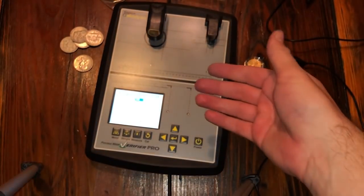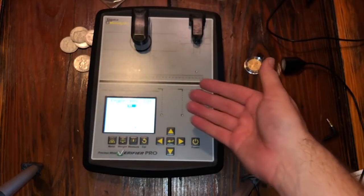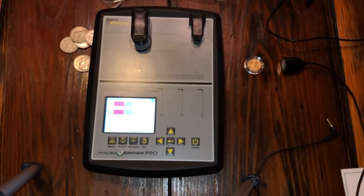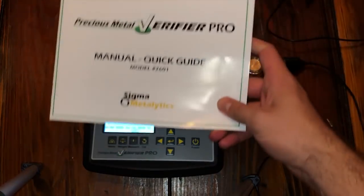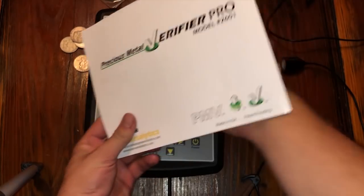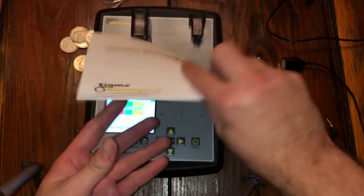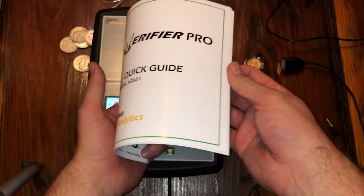Let me know what you think. I'll put a link in the bottom to the eBay page I got it. It's their official eBay page I'm pretty sure. A big shout out to Sigma Metalytics. They did not pay me to do this, I paid for this verifier, but they were nice enough to send me a silver round which I want to thank them for to do testing with, which was awesome.